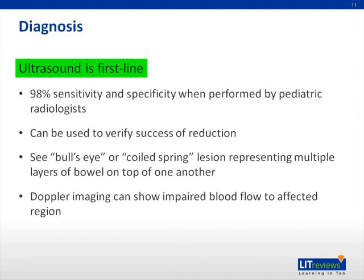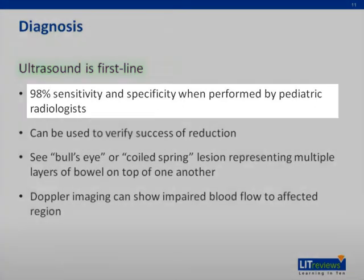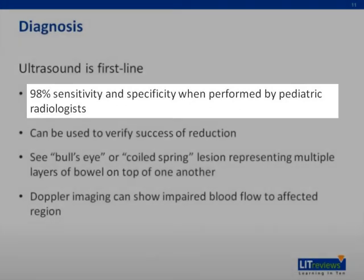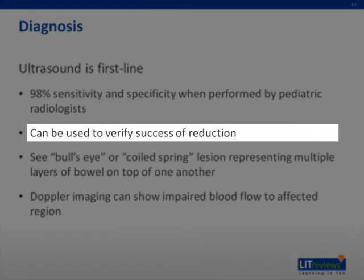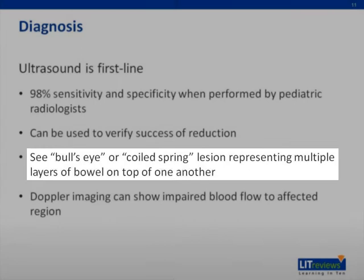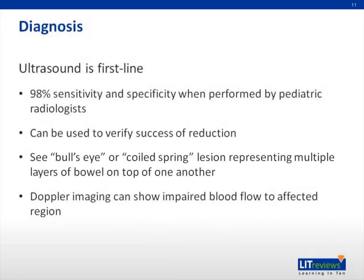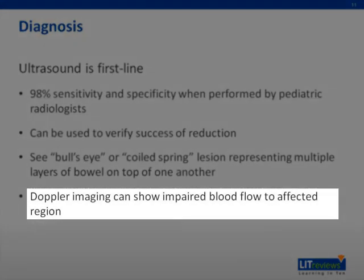Ultrasound is the preferred method for diagnosing intussusception. In the hands of experienced pediatric radiologists, ultrasound has 98% sensitivity and specificity for diagnosing intussusception. Another advantage is that it can be easily used to verify the successive reduction of the intussusception. The classic appearance of intussusception on ultrasound is a bullseye or coiled spring lesion, representing multiple layers of bowel on top of one another. Additionally, Doppler ultrasound can be used to identify reduced blood flow to the affected bowel loop.